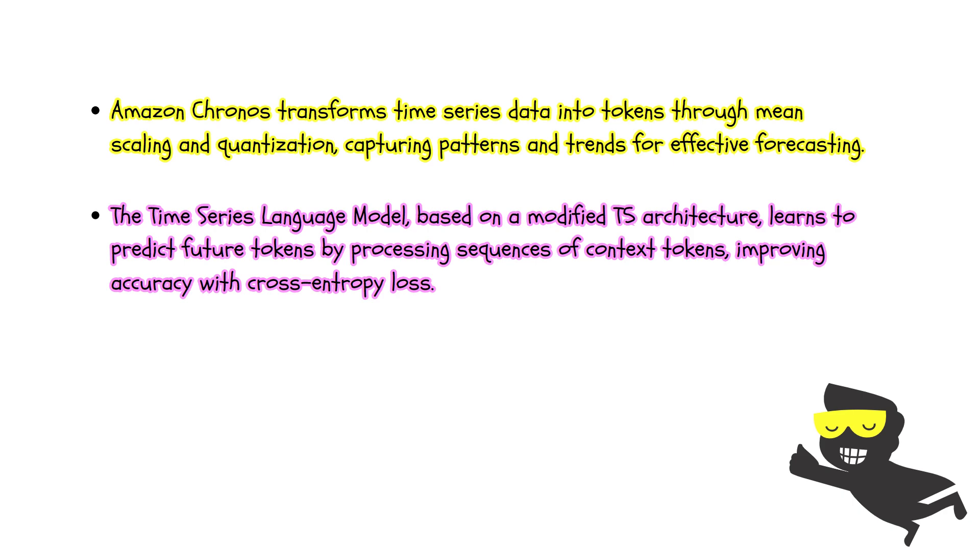The core of Chronos lies in the modified T5 architecture. During training, the model processes sequences of these tokens, predicting the probability of each possible next token using a cross-entropy loss function. This method helps the model learn the intricate patterns within the data.